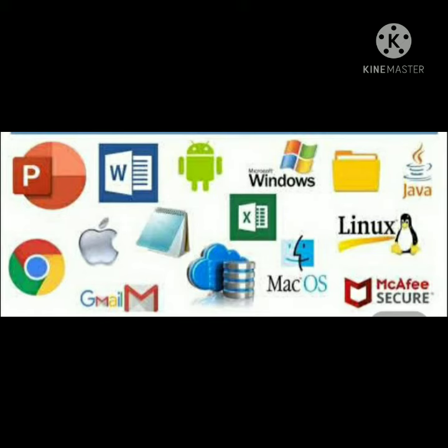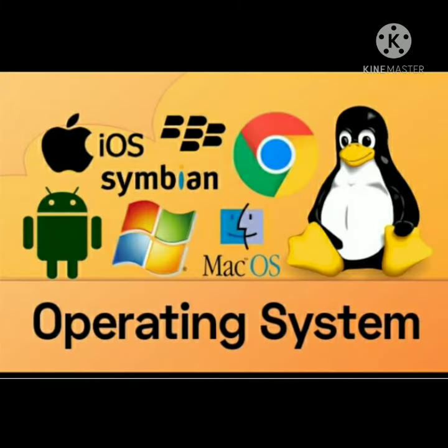The operating system is the low-level software that supports a computer's basic functions such as scheduling tasks and controlling peripherals. It is the most important software, without which we cannot work on a computer system. Some popular operating systems are MS Windows 10, Linux, macOS, Android, and iOS.